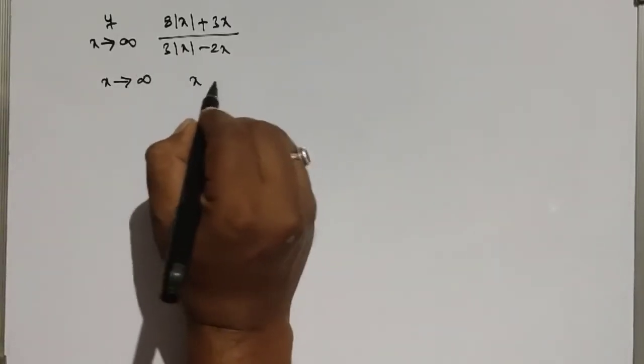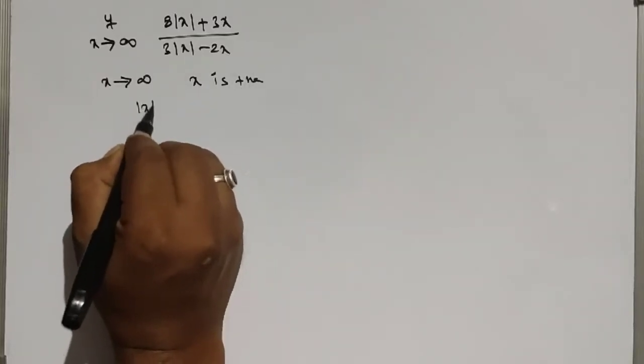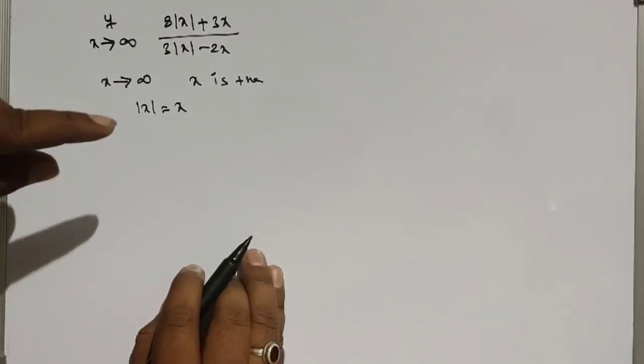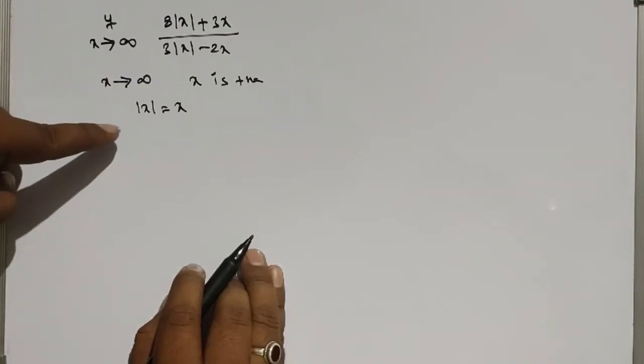Here, x is positive, therefore |x| takes x directly. When x is tending to positive infinity, not negative infinity, the x value is always positive only. That's why |x| = x.